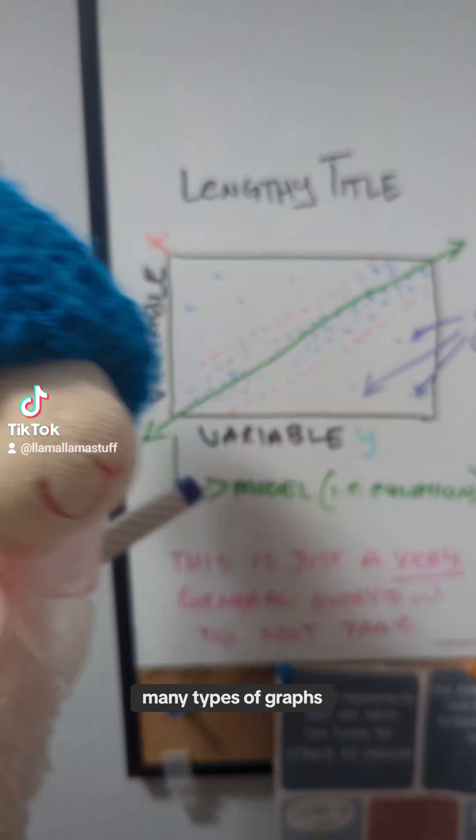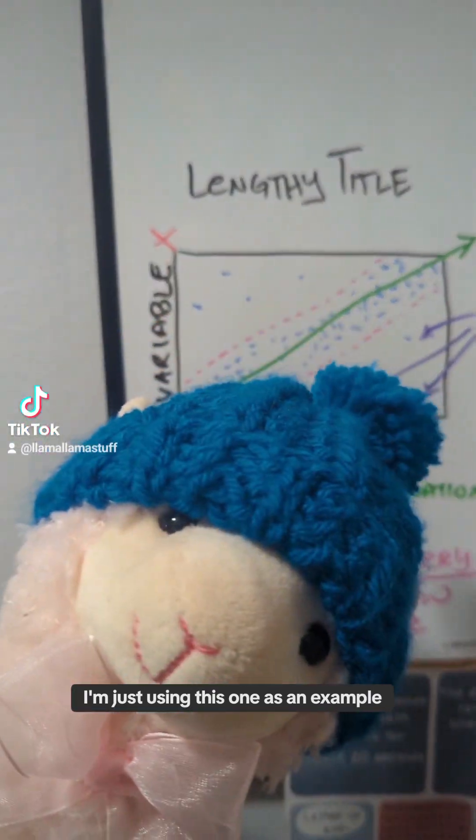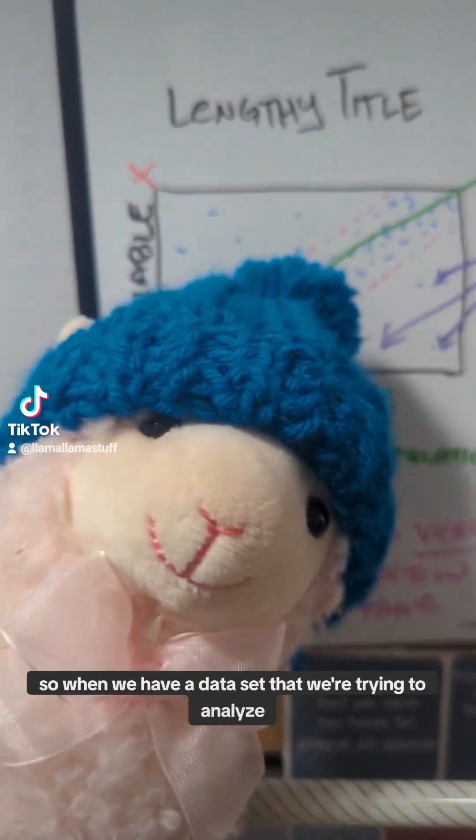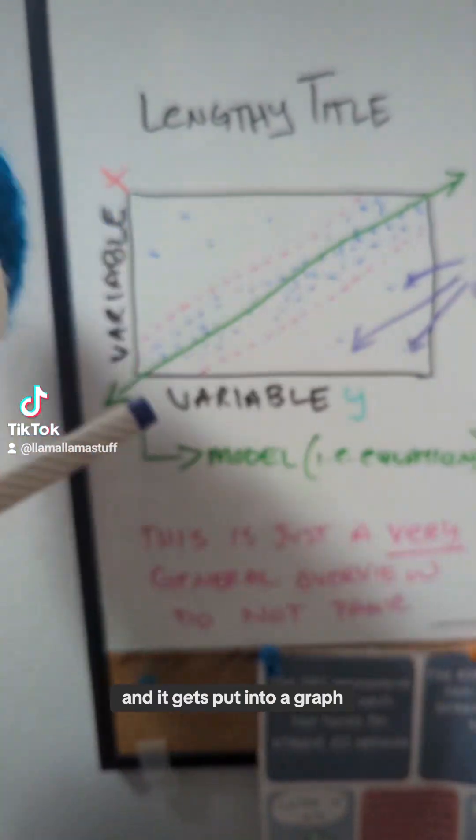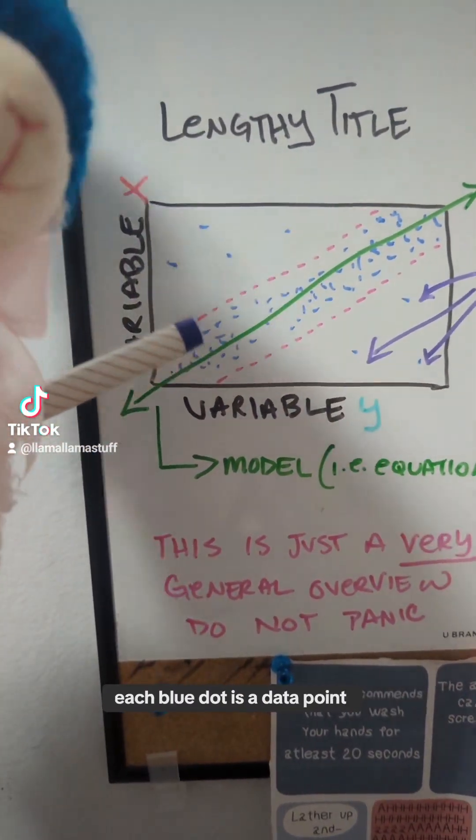There are many types of graphs. I'm just using this one as an example. So when we have a data set that we're trying to analyze and it gets put into a graph, it may look like this with all the little blue dots. Each blue dot is a data.